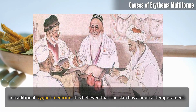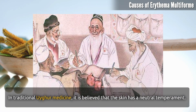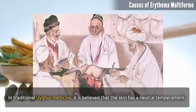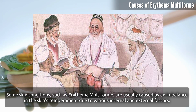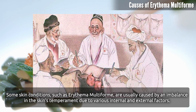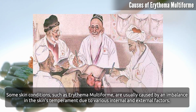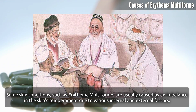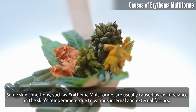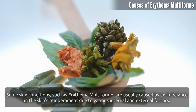In traditional medicine, such as Uyghur medicine, it is believed that the skin has a neutral temperament. Some skin conditions such as erythema multiforme are usually caused by an imbalance in the skin's temperament due to various internal and external factors.